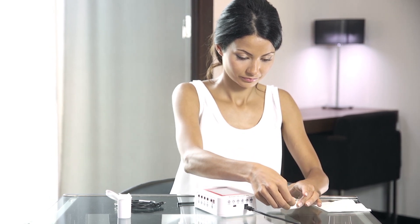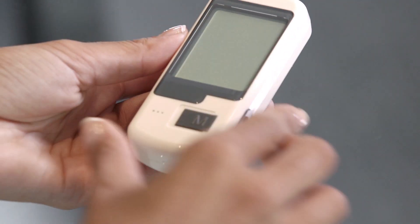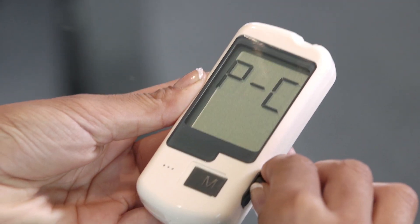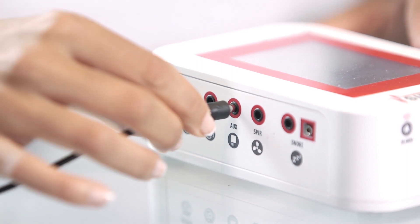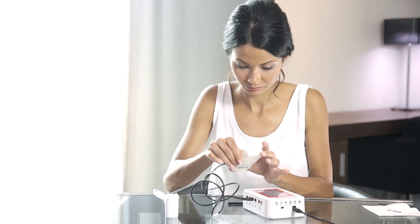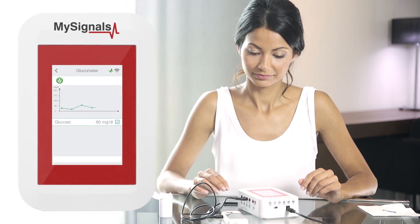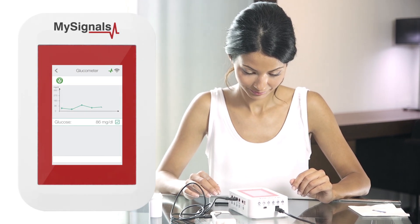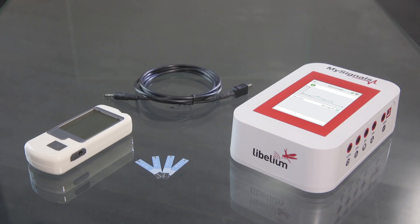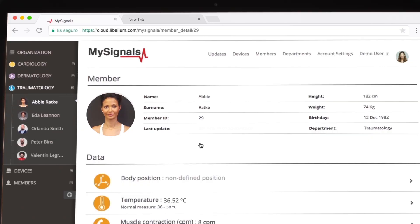You can send the data to the my signals device. Plug in the mini USB connector in the glucometer and the jack connector in the my signals device. Now you can visualize glucometer values in real time on the my signals screen using the standalone mode. Remember, you can also send the data to the cloud by using the Bluetooth and Wi-Fi modes.